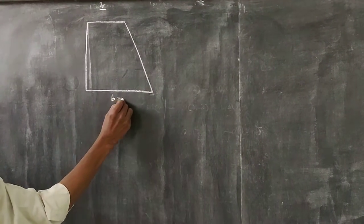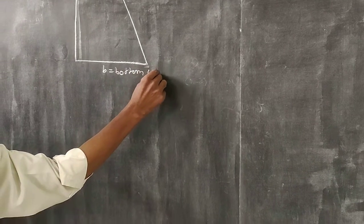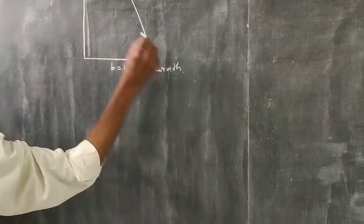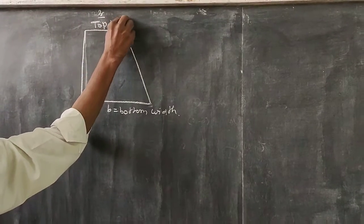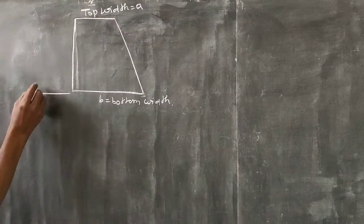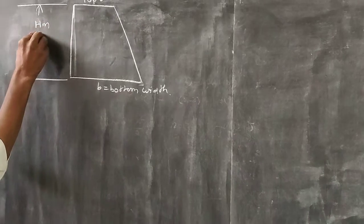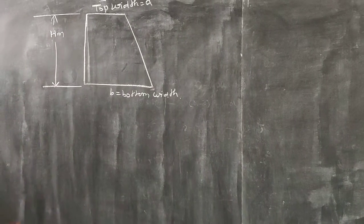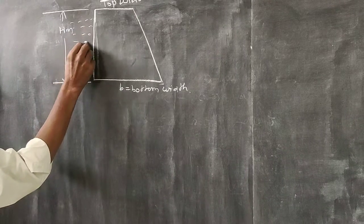The bottom is B, the top is A. The dam height is H. The water level in the dam is small h.